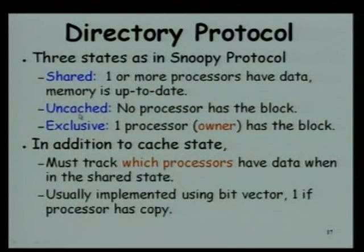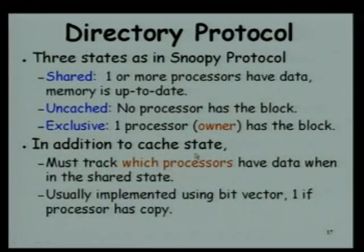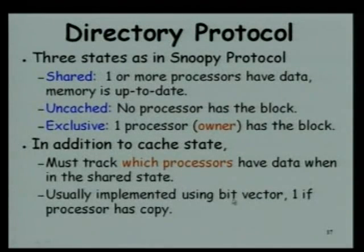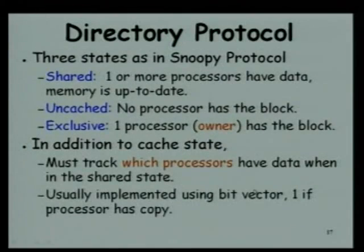In the uncached state and exclusive state, one processor has the block. In addition to the cache state, we must track which processors are using it. An efficient implementation uses a bit vector — rather than storing the full address for each node, we just have one bit corresponding to each node. If the bit is set, then the node has it; if it is 0, it does not.